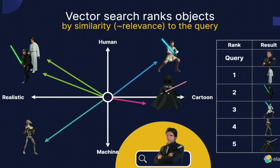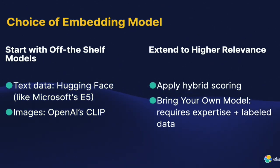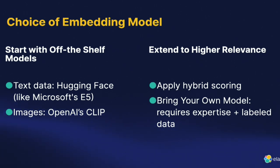To do this, you need to transform your dataset into vectors, and for that you use machine learning models — one of the hardest parts is finding the right model for your use case. You can start with off-the-shelf models from Hugging Face: for example, Microsoft E5 is nice for multilingual content including French or Bulgarian; OpenAI CLIP is for images. If that's not enough, you can apply hybrid scoring or create your own model, which requires training on your own data.